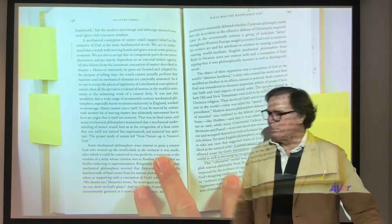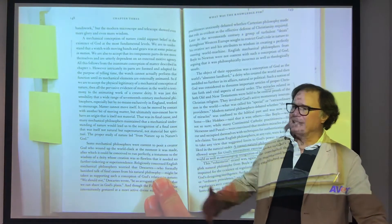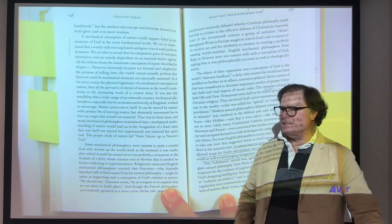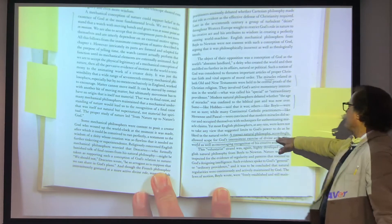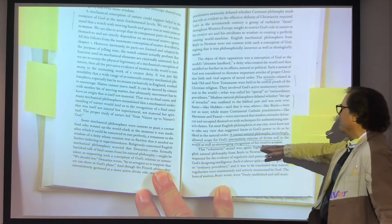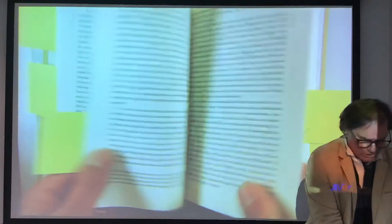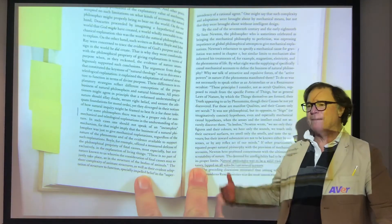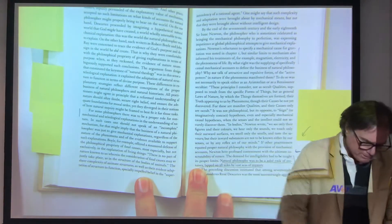Also, Boyle especially is a good example - and Newton too - they're not attacking the church, not trying to undermine religion in any fundamental ways. Newton is not a Trinitarian, but everybody's fighting about things like what's the meaning of a miracle, how do miracles work. A correct natural philosophy accordingly allowed scope for God's intermittent exercise of divine will in the world. This is the sort of stuff that's allowing for. But the mechanical universe - Boethius said this.